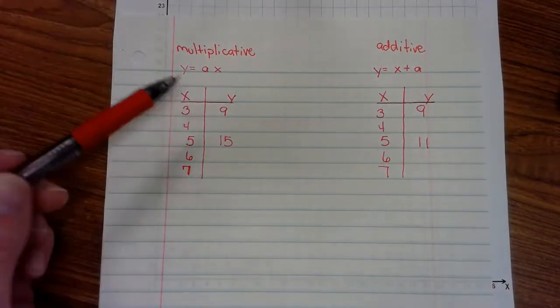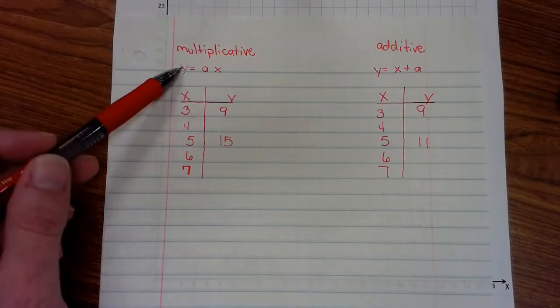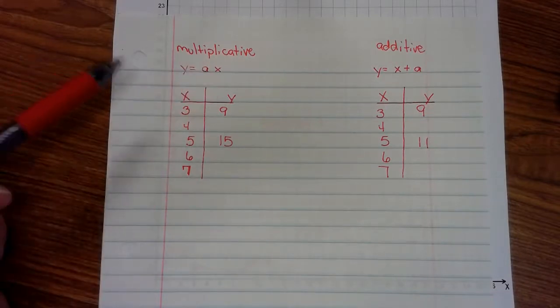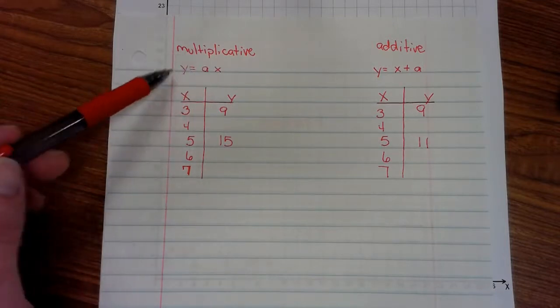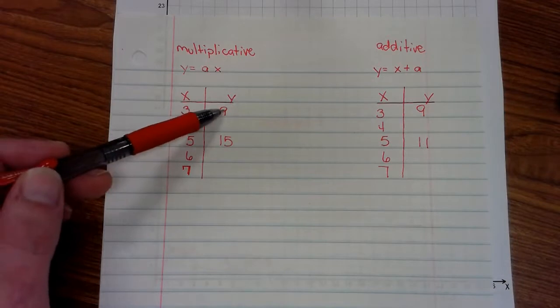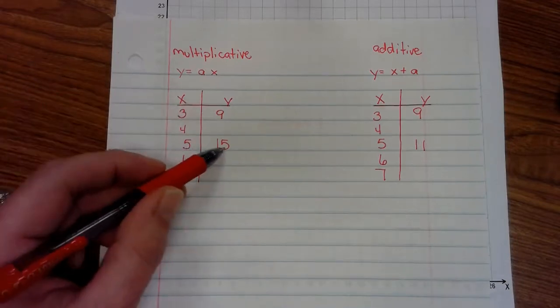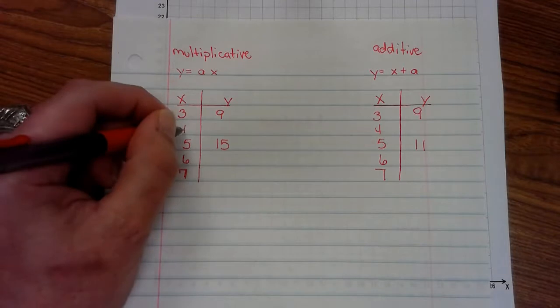I know that I'm multiplying because I have y equals a times x. I see that I have a 3 and 9. I know that I'm multiplying. 3 times 3 is 9. 5 times 3 is 15. Therefore, I can fill these in.